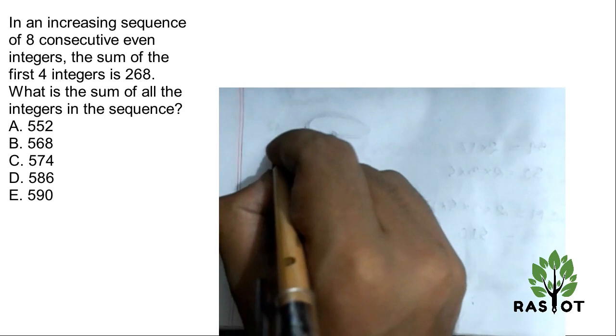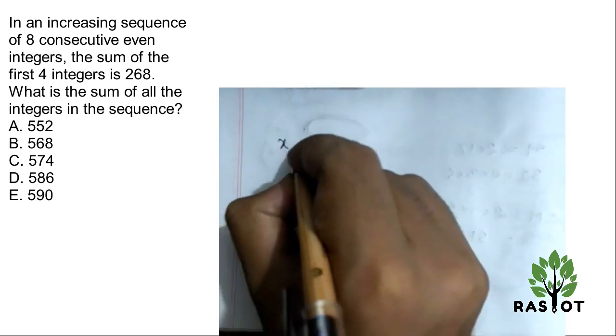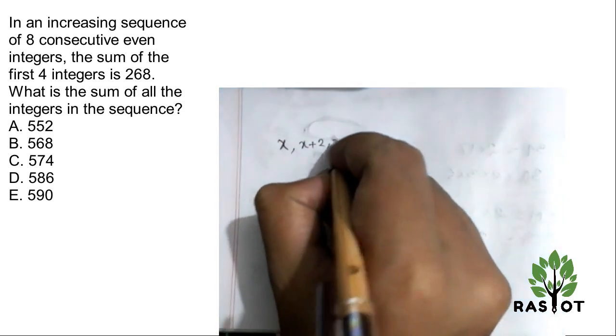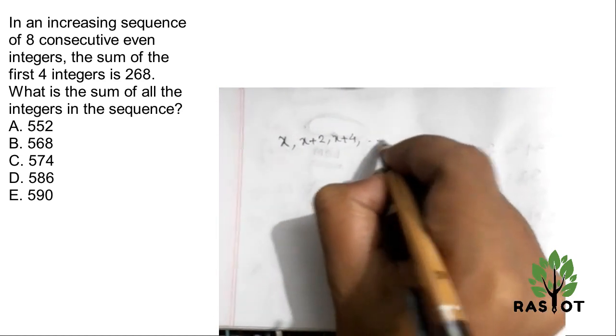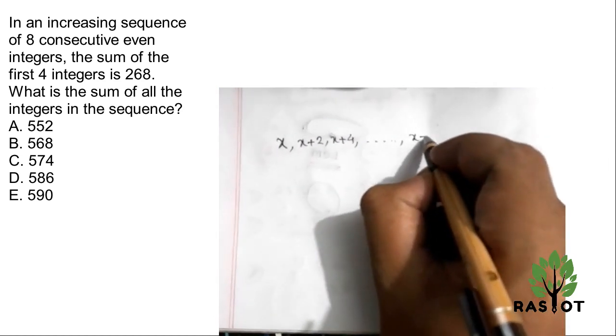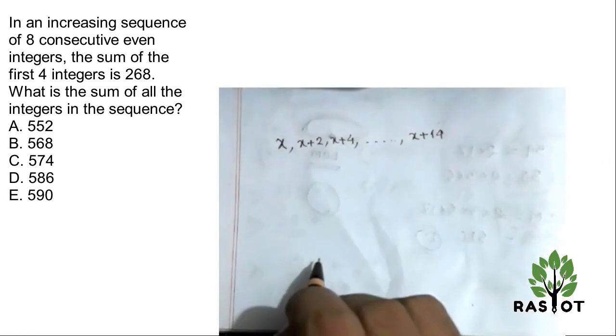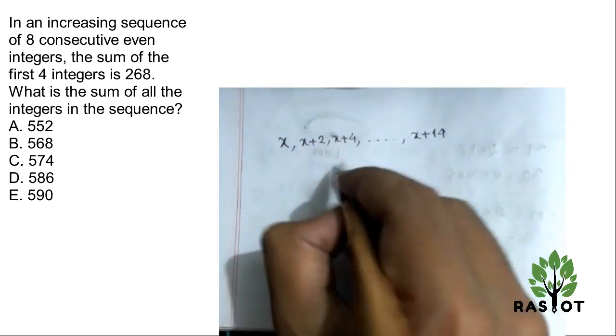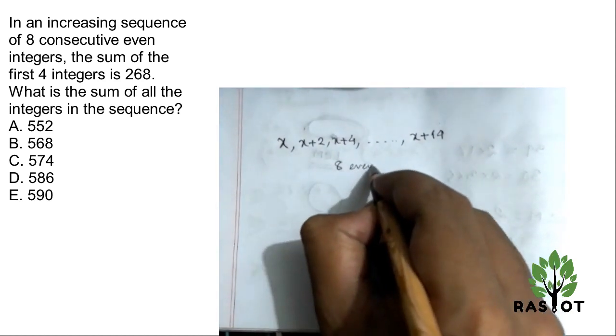So we have the first even integer, x suppose. So x, x plus 2, x plus 4, what happens, x plus 14. This is 8 even integers, consecutive.